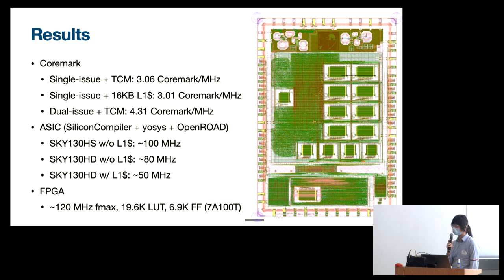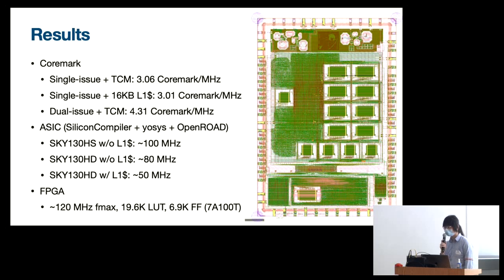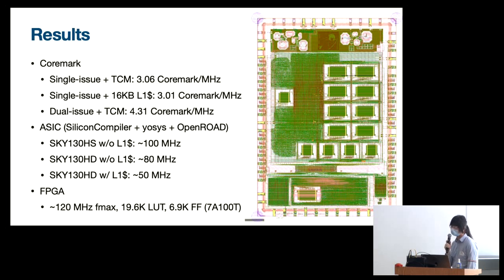Further optimization is probably something for the future. I'm happy with the result as this is my first RISC-V project, and the whole thing was written from scratch in about three weeks. I also implemented it with Yosys and OpenROAD using a silicon compiler targeting the Sky130B process node. Without cache it achieves around 80 megahertz FMAX, but drops to 50 megahertz if cache is enabled, with the cache tag comparison becoming the critical path.